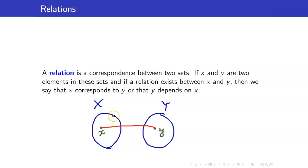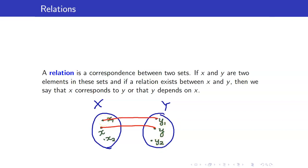It is possible to have other elements in X. So here I have other elements in X: x1 and x2, and two other elements in Y: y1 and y2. It's possible that x1 is related to y1, x2 is also related to y1, and x2 is related to y2. So that is just a relation — you're just getting correspondence between the elements in X and the elements in Y.